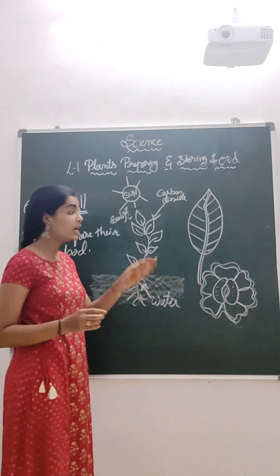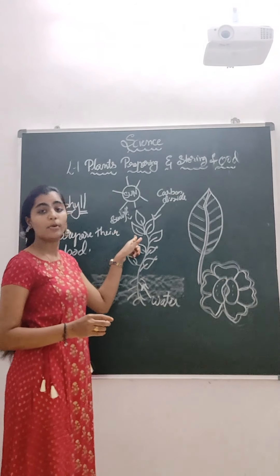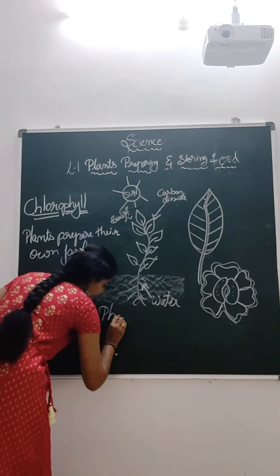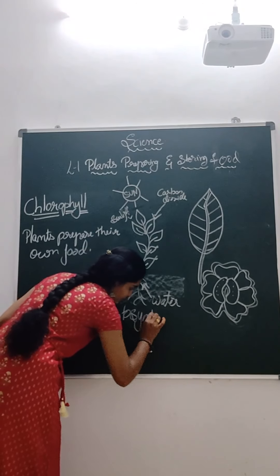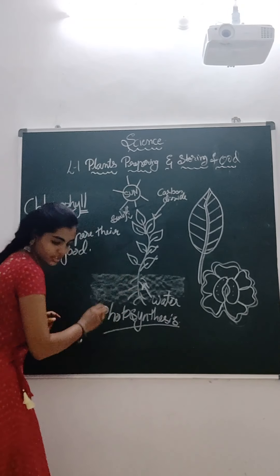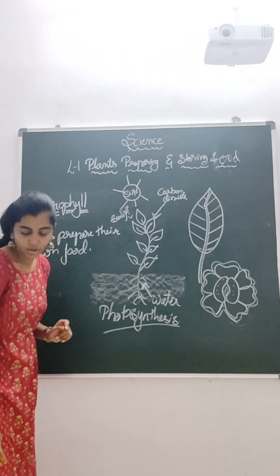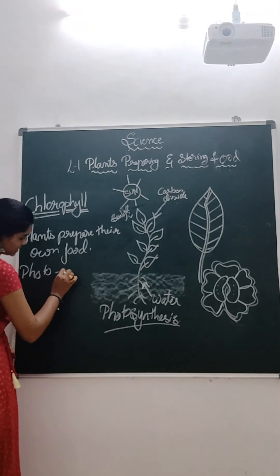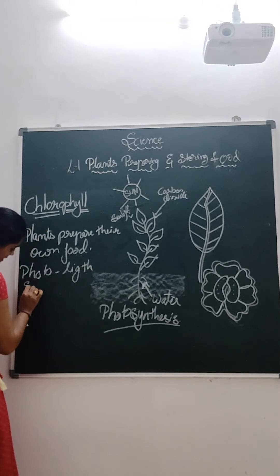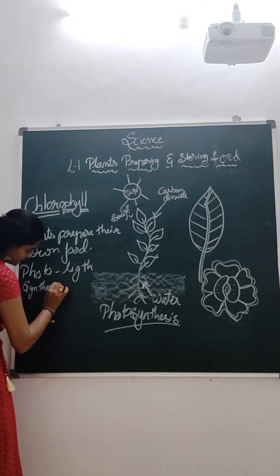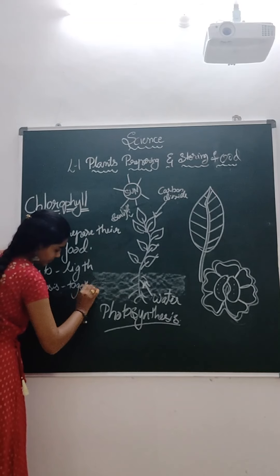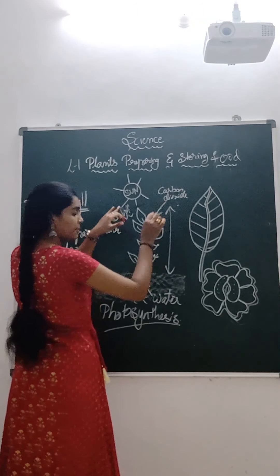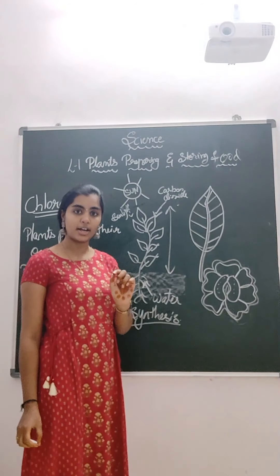Carbon dioxide and water are converted into sugar in the presence of sunlight with the help of chlorophyll. This process is called photosynthesis. Photo means light. Synthesis means together. The sunlight puts carbon dioxide and water together to prepare food. This process is called photosynthesis.